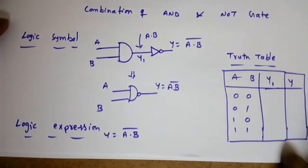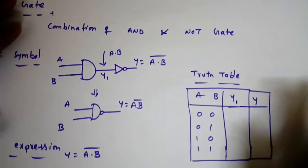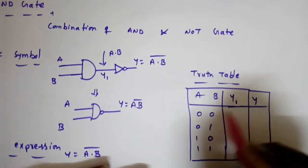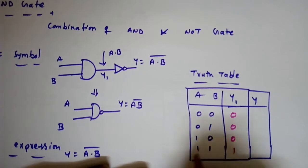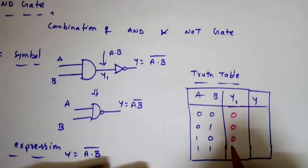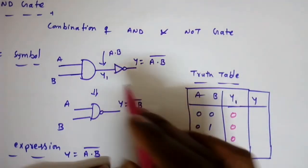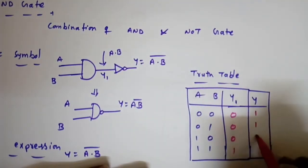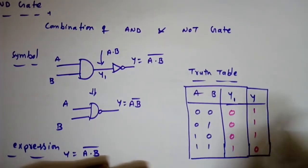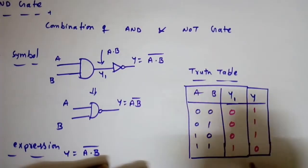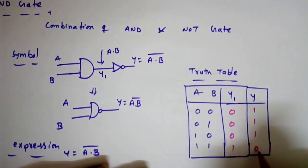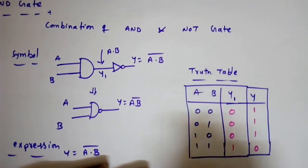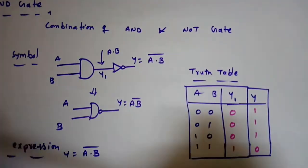The NAND gate logic expression is simply A·B whole bar. For the truth table, we first look at the AND operation: the output is 0,0,0,1 — only when both inputs are high is the output high. After applying the NOT gate, we invert this to get 1,1,1,0. So in NAND operation, if both inputs are high, the output is zero.